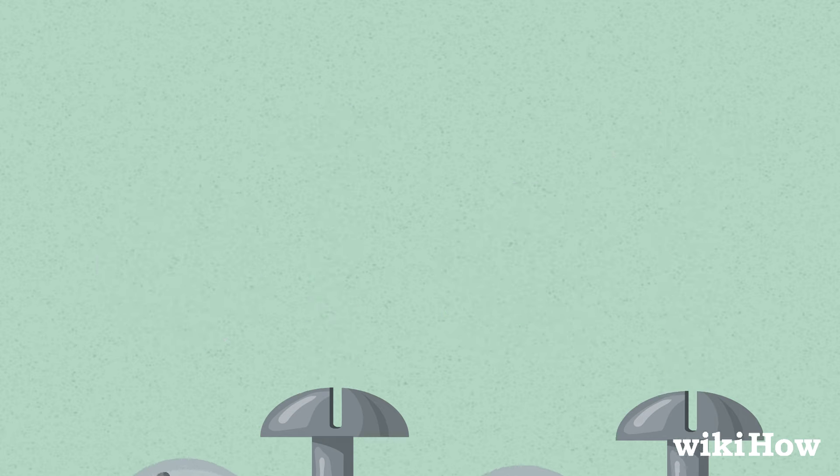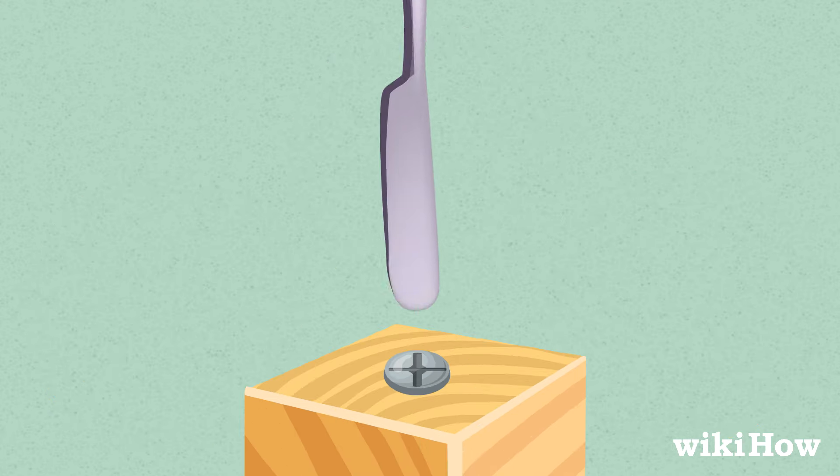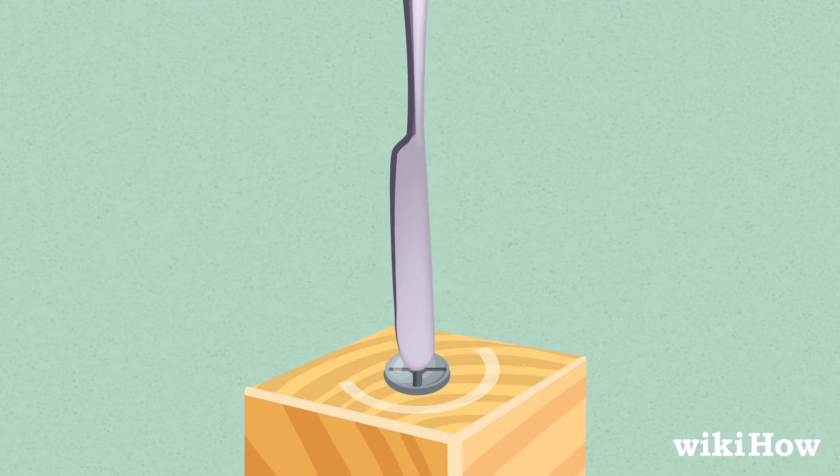For instance, try inserting the edge of a coin, the tip of a butter knife, or even your thumbnail into one of the grooves at the top of the screw. Use the flat edge of the object to turn the screw counterclockwise and loosen it, just like you would with a regular screwdriver.